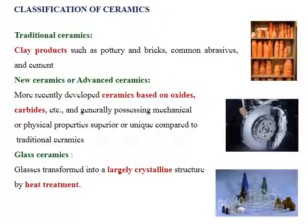Glass is a good example of amorphous material. But by heat treating glass, it can be converted into glass ceramics, which has some crystallinity compared to normal glass. Glass is thus transformed into a largely crystalline structure by heat treatment, and such materials are called glass ceramics.